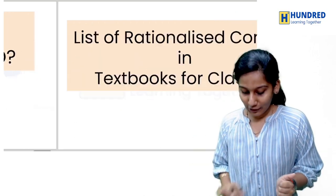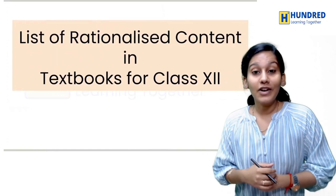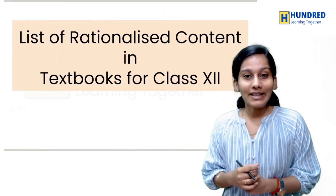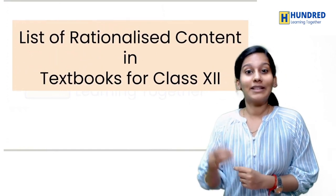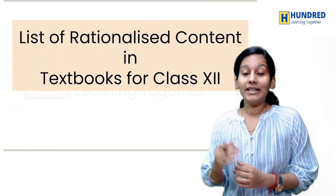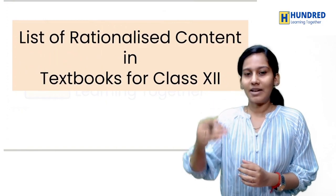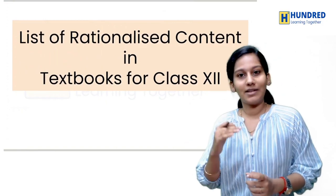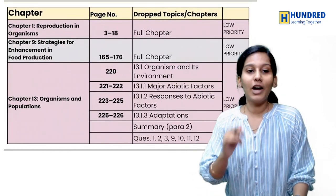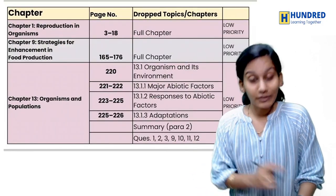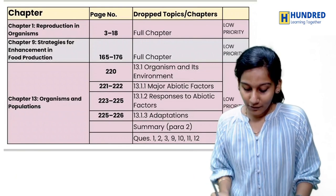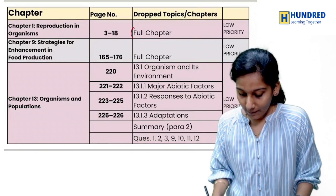Let's start the video. First, we will talk about Class 12. In Class 12, we will see which chapters and topics are removed, and which are higher or lower priority. Starting with the first chapter: the Reproduction in Organisms chapter is to be removed — the full chapter is removed, and it is of lower priority.